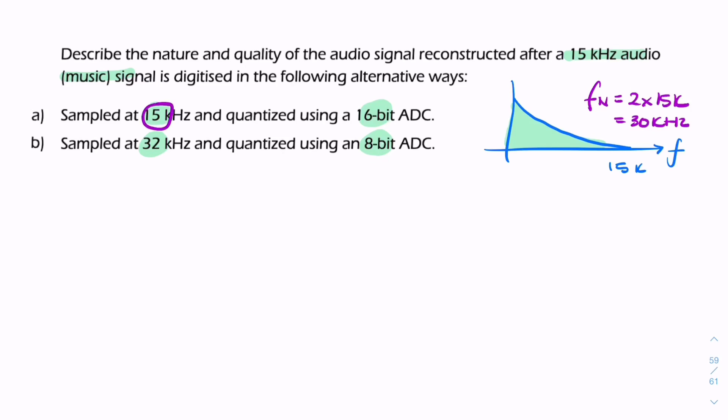If we're only sampling at 15 kilohertz, we're only capturing half the spectrum - literally everything up to and not including 7.5 kilohertz, losing all the high-frequency content. For music, the high-frequency content is the treble and the low-frequency content is the bass.